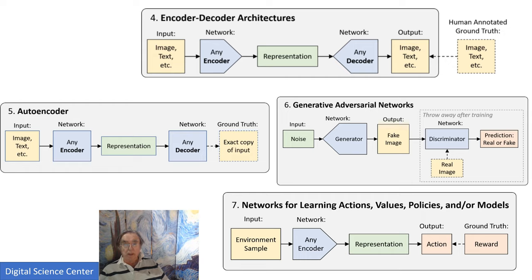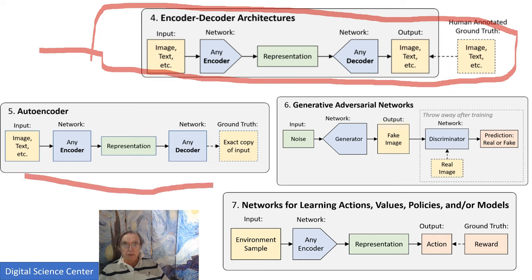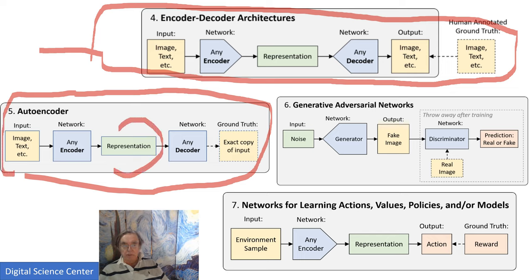Looking at the neural network types we won't cover in detail: encoder-decoder architectures are very general, and I'm using them with sequences. Autoencoders I use for representations — so-called dimension reduction — a very powerful approach. I have not personally done GANs — generative adversarial networks to generate fake images — nor reinforcement learning, though one of my students is writing his thesis on reinforcement learning.